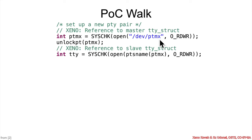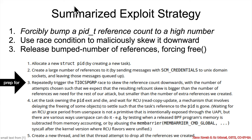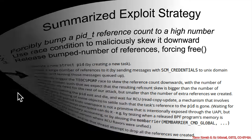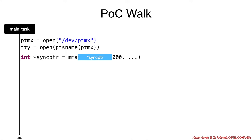Then there is opening the pseudoterminal multiplexer, which gets back a reference to the master TTY struct, and opening the slave TTY struct. That is exactly the kind of thing we saw earlier in the vulnerability background — preparation for the race condition to skew the count downward. Next is setup of some shared memory via mmap, asking for hex 1000 bytes of shared memory. This introduces the sync pointer, which will be used during the race so that the child and parent processes racing each other can synchronize and race at the exact same time.